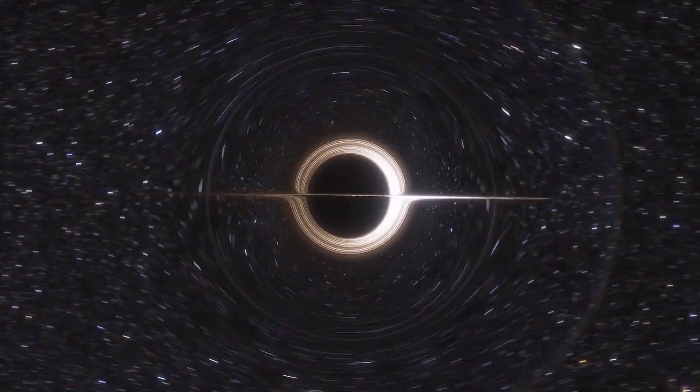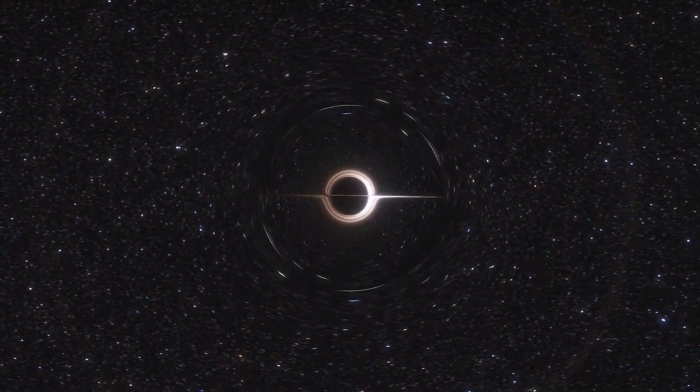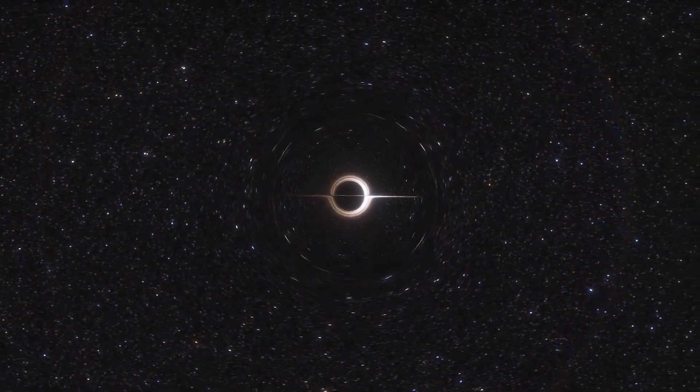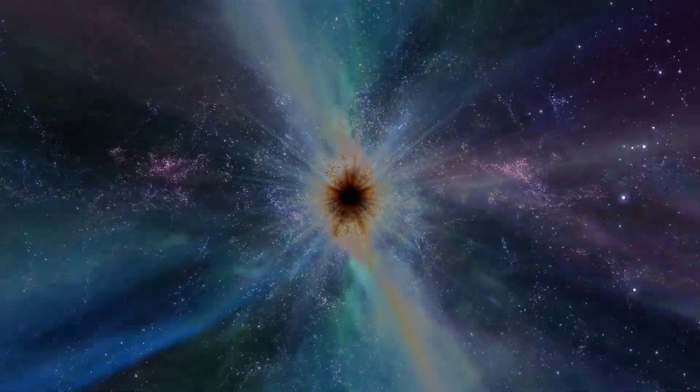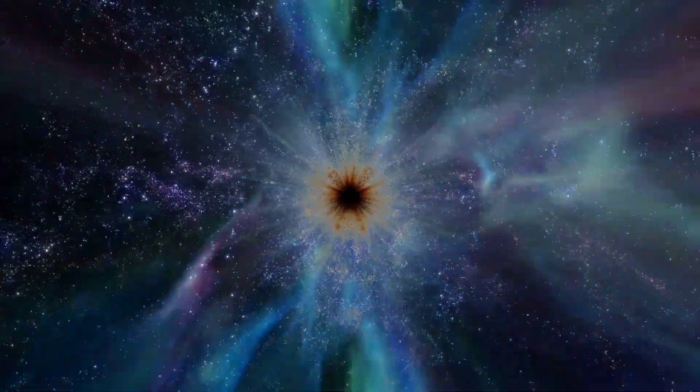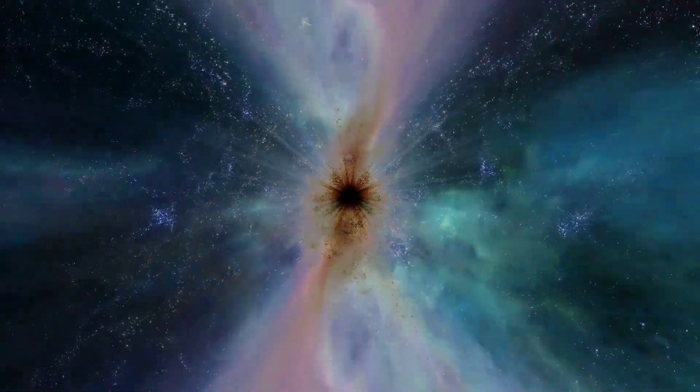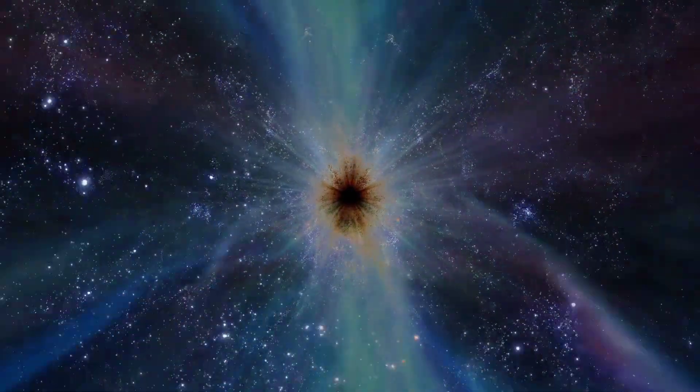Light, which normally travels in a straight line, is bent so strongly by the black hole's intense gravity that it can be pulled towards it. This has surprising implications. Close to a black hole, the very notion of straight and curved is transformed.